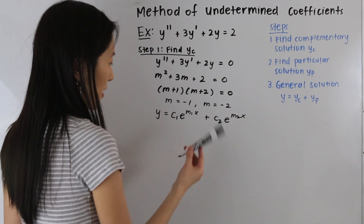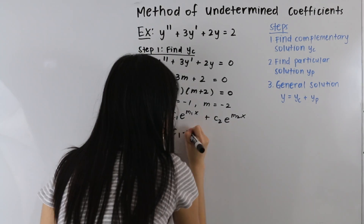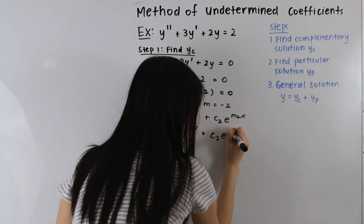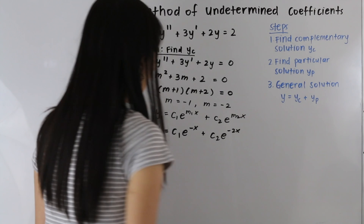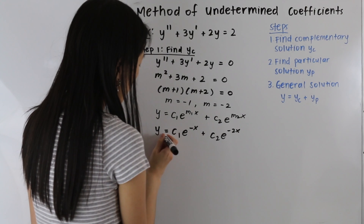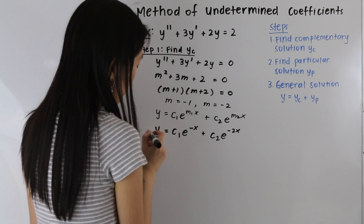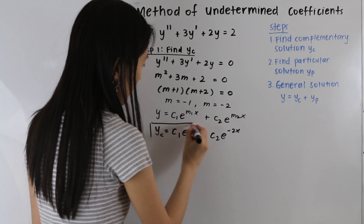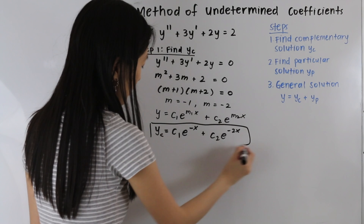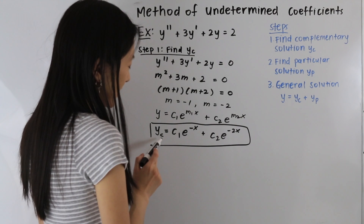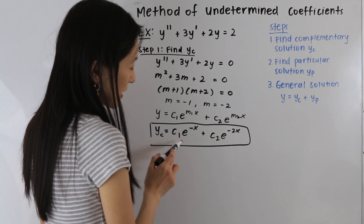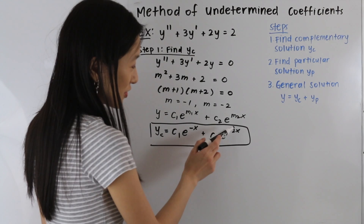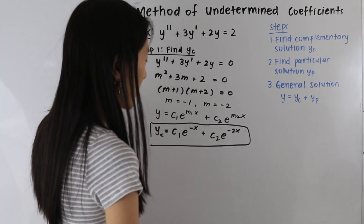So let's go ahead and plug in our m values. We end up with the following for our complementary solution: yc is equal to c1e to the negative x plus c2e to the negative 2x.